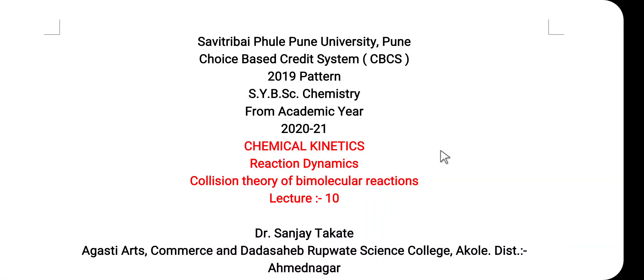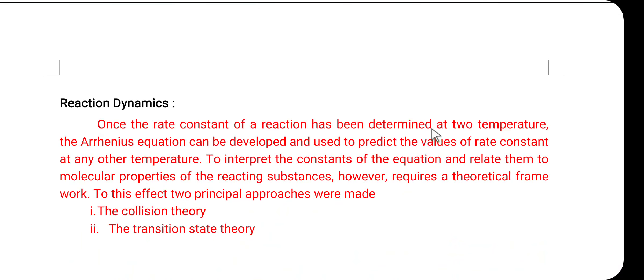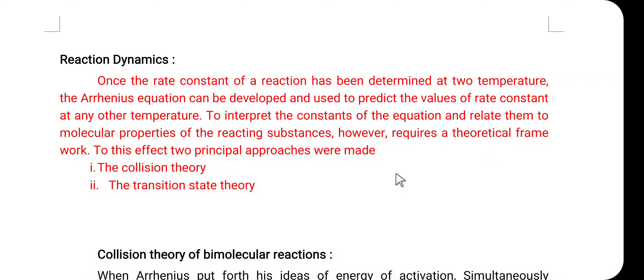In this lecture we are going to discuss the collision theory of bimolecular reaction. In the last few lectures we discussed the Arrhenius equation, where we derived the expression and identified the important term: the energy of activation. The minimum amount of energy the reactant molecules must acquire before they can react is called the energy of activation. We also discussed two methods to determine it: the graphical method and the substitution method.